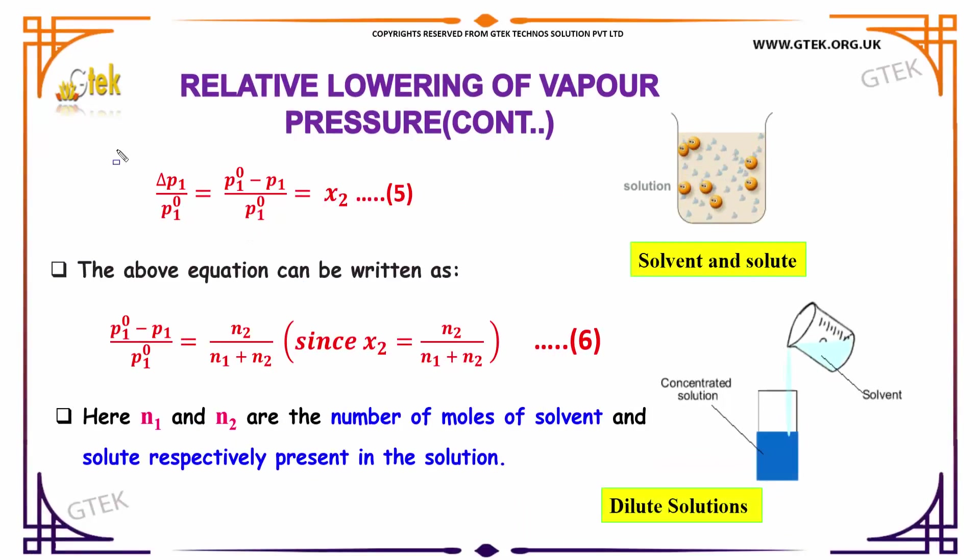Here is the equation I got. This can be rewritten as P10 minus P1 divided by P10 is equal to N2 divided by N1 plus N2. As you know, x2 is equal to N2 by N1 plus N2, our relative moles. N1 and N2 are the number of moles of the solvent and solute respectively.